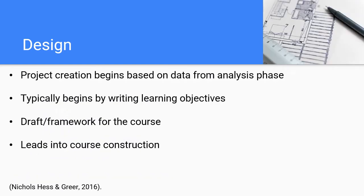Phase two is design, the second step in the ADDIE model. In the design phase, our project begins to take shape. We create some sketches based on the data from the analysis phase. We begin with writing learning objectives and we create a framework for our course. This leads into course construction in phase three.